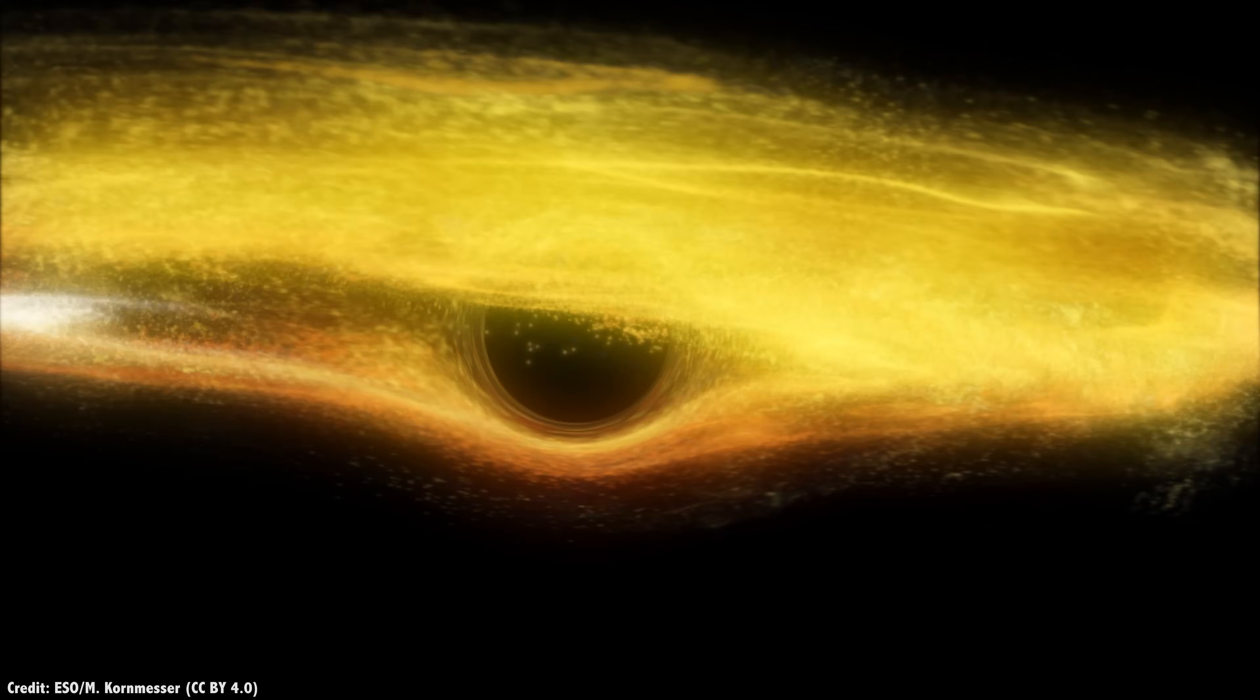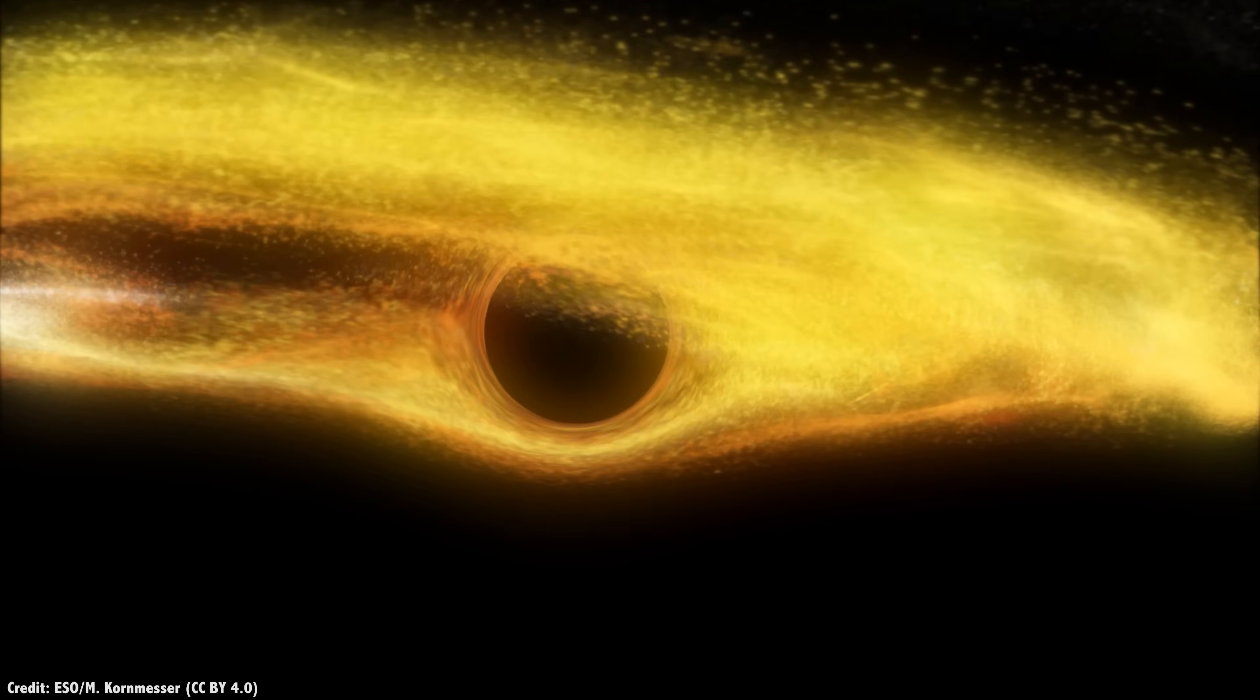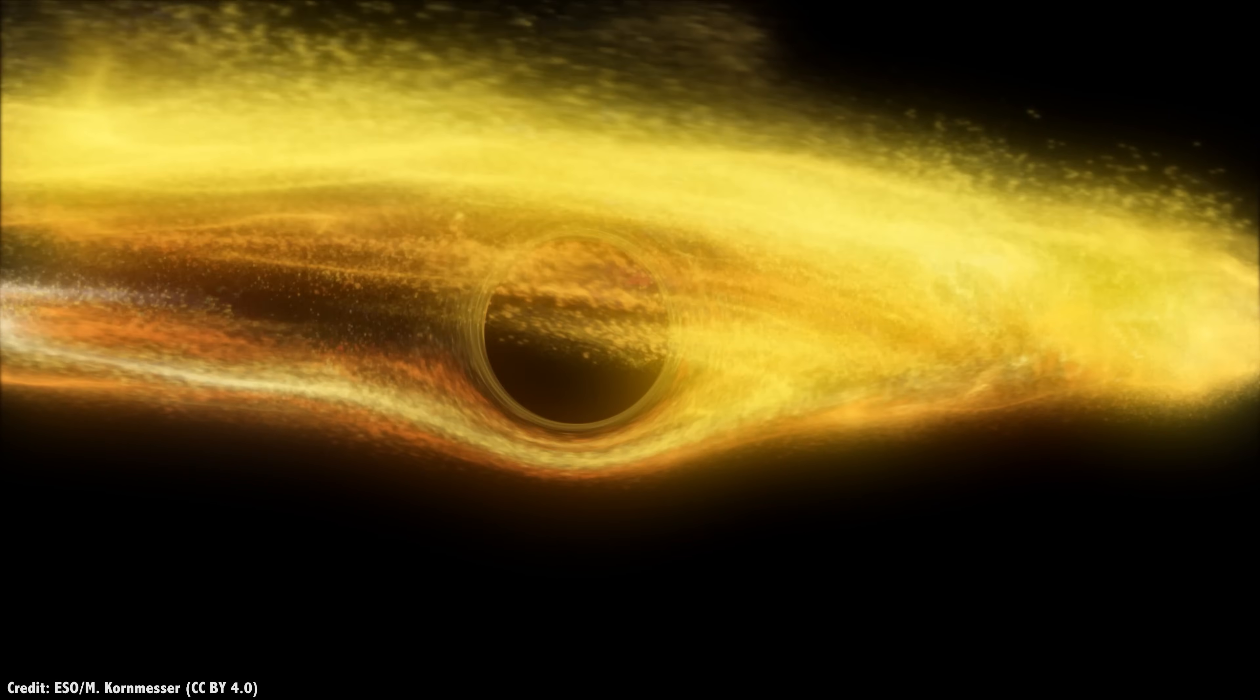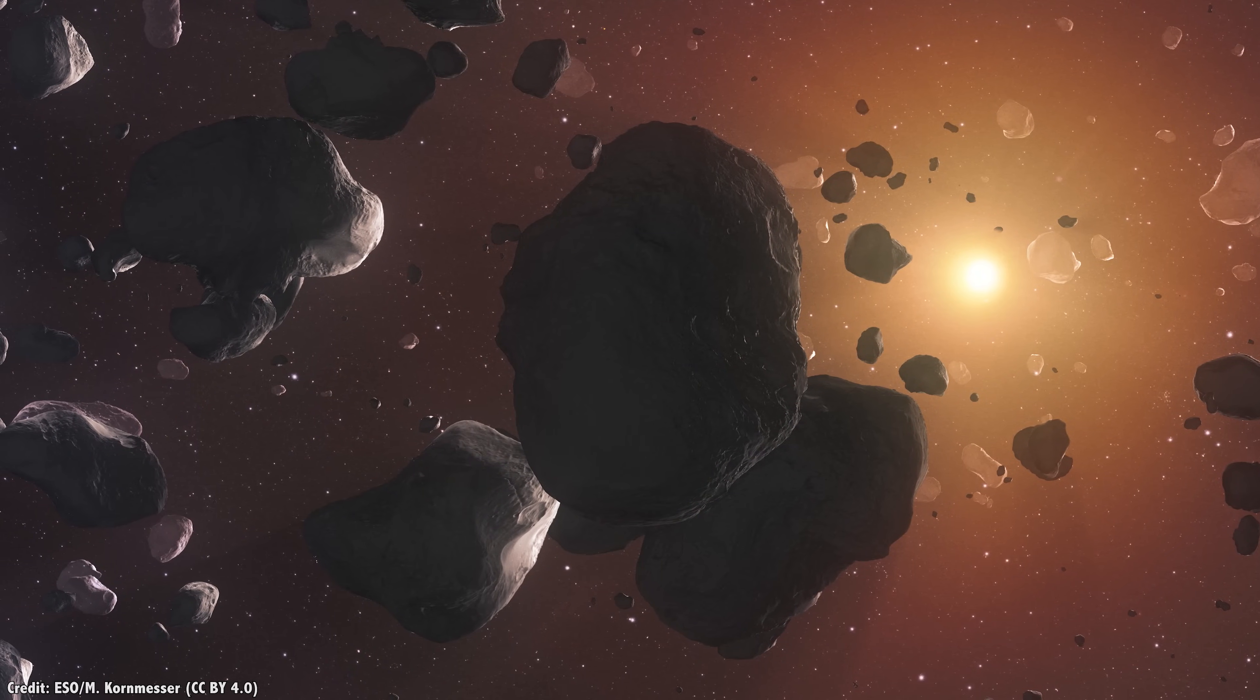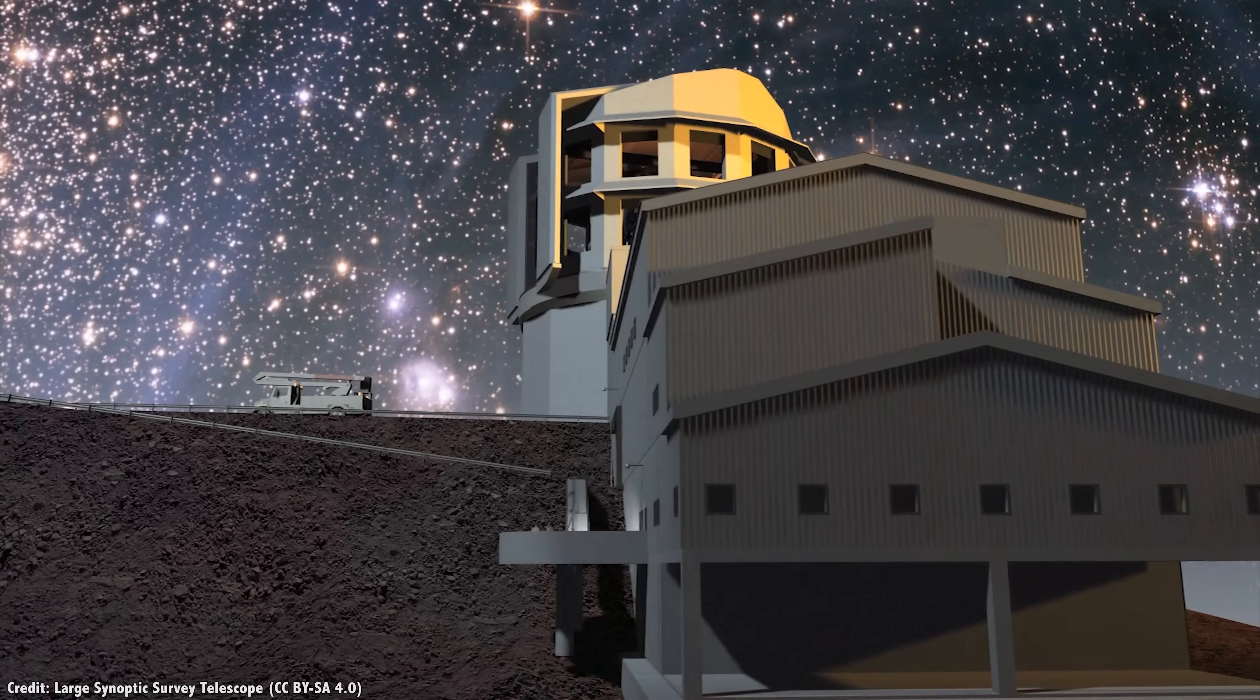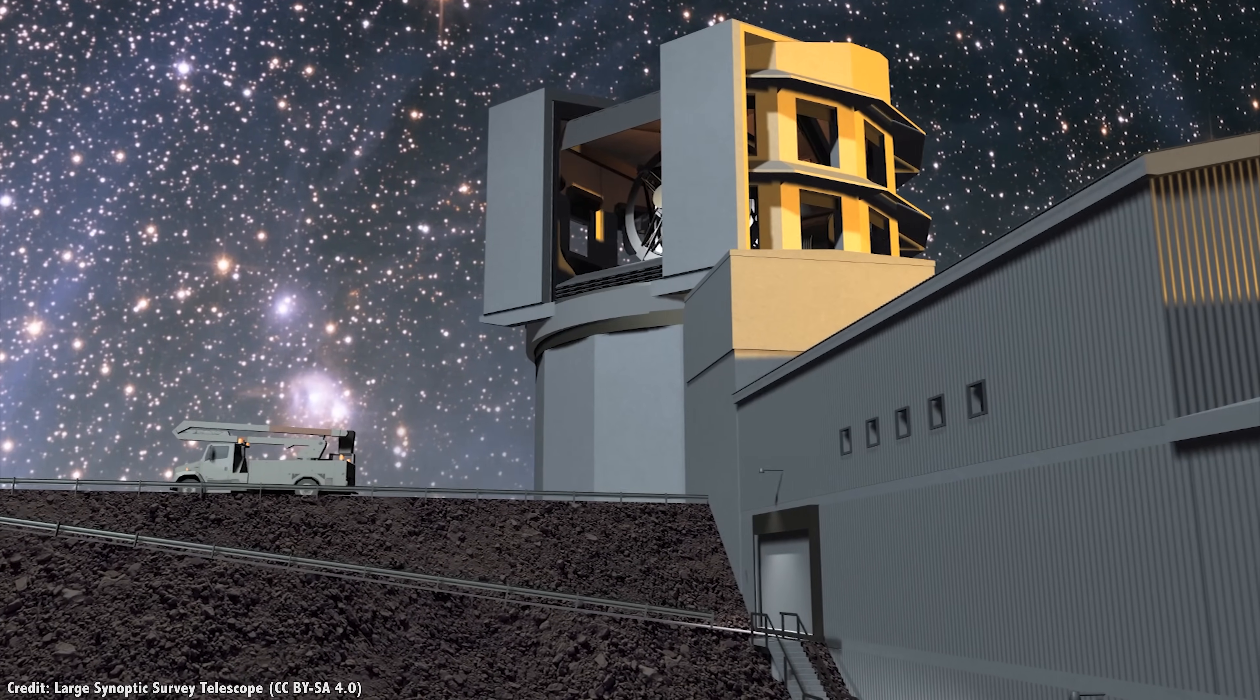In theory, this tiny black hole will have a tiny accretion disk of gas around it from the interstellar medium that it's feasting on. This will heat up, melting nearby icy objects in the Kuiper Belt. So in theory, the upcoming Vera Rubin Observatory will be able to detect the flashes from icy objects getting too close to the black hole.